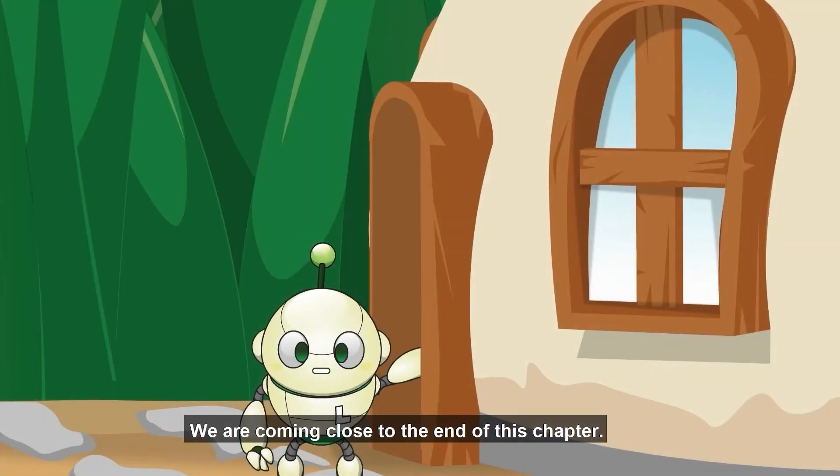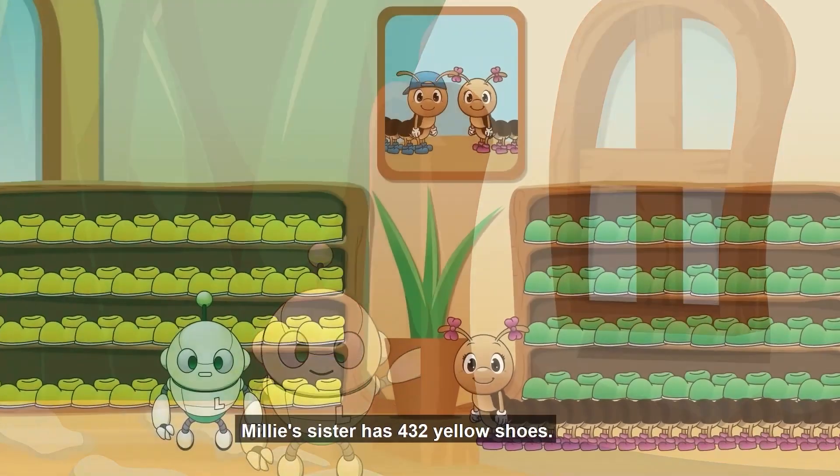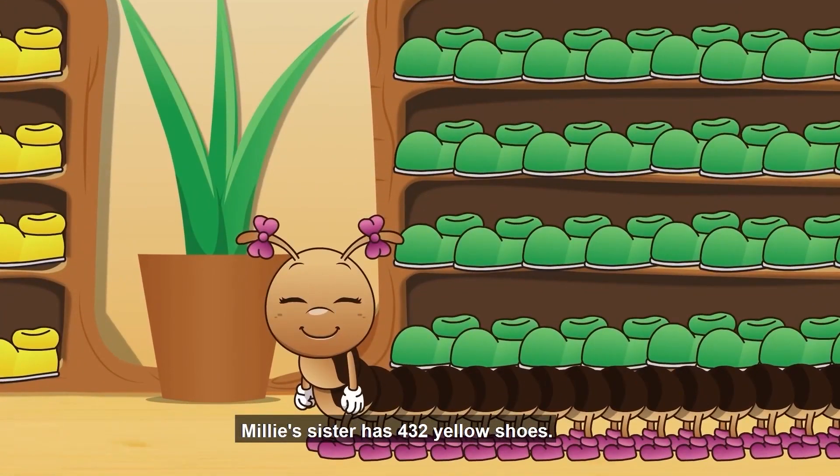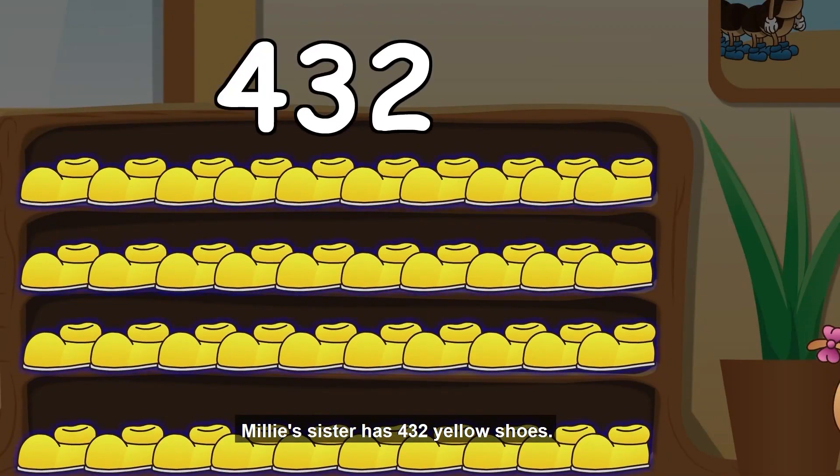We are coming close to the end of this chapter. Let's keep going. Millie's sister has 432 yellow shoes.